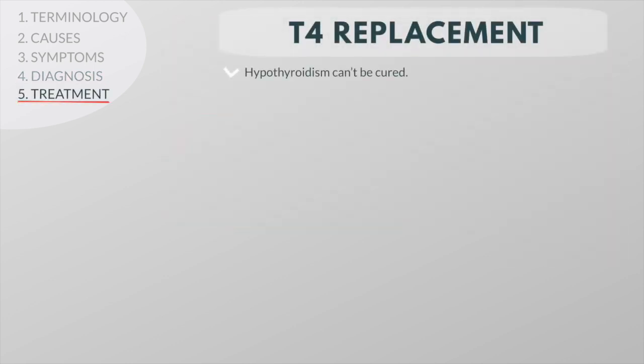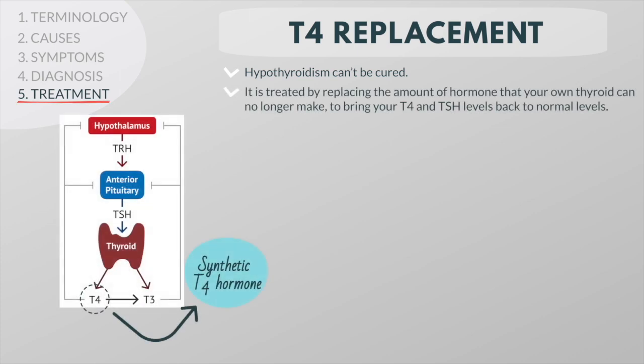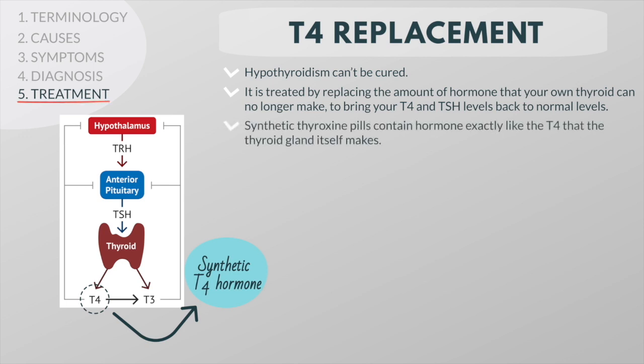Hypothyroidism cannot be cured, but in almost every patient, hypothyroidism can be completely controlled. It is treated by replacing the amount of hormone that your own thyroid can no longer make, to bring your T4 and TSH levels back to normal. So even if your thyroid gland can't work right, T4 replacement can restore your body's thyroid hormone levels and your body's function. Synthetic T4 pills contain hormone exactly like the T4 that the thyroid gland itself makes.